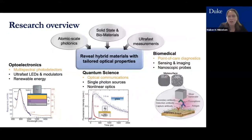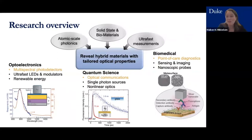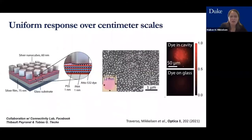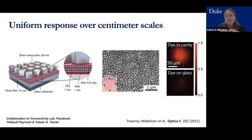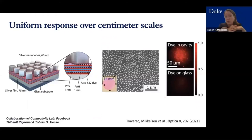Metasurfaces could have very interesting applications in optoelectronics for multi-spectral photodetectors. The next example is in quantum science and optical communications. We collaborated with the Connectivity Lab at Facebook, who are very interested in bringing internet to remote parts of the world via free-space optical communications from satellites or drones — requiring large-area detectors that can detect diverging light fast, as well as fast light sources.